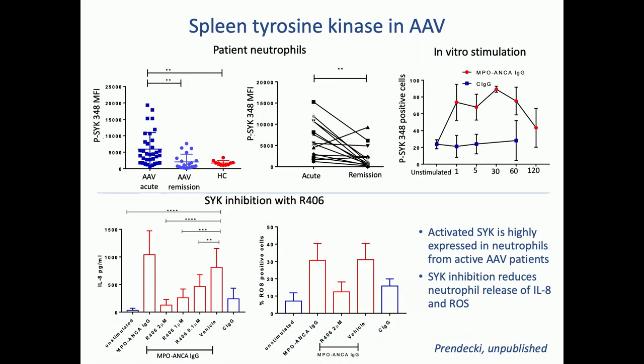I mentioned SYK — spleen tyrosine kinase — which is one of our favourites. A lot of work in our group, led by Fred Tam, concerns SYK. This is work from Maria Prendecki, who looked at patient neutrophils and found that phosphorylated SYK — the active form — was significantly raised in active disease and falls during remission. ANCA can stimulate normal neutrophils to phosphorylate SYK. When we use our SYK inhibitor R406, we can block the effect of ANCA on the neutrophil, with dose-dependent inhibition of IL-8 production and inhibition of reactive oxygen species release. SYK may be a good therapeutic target in future trials.